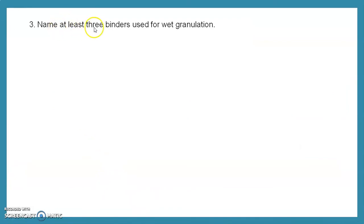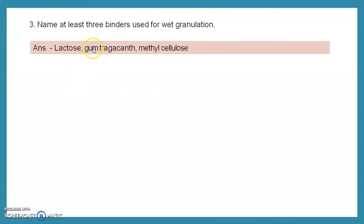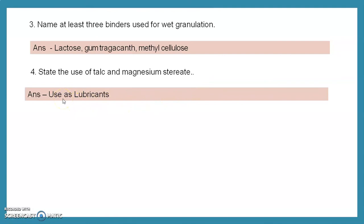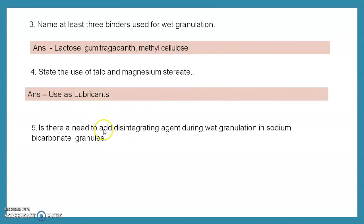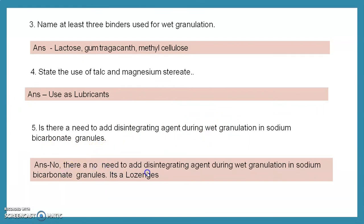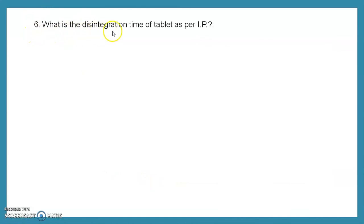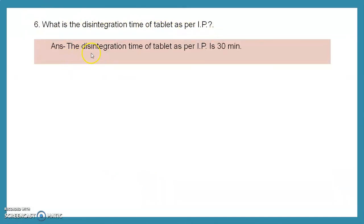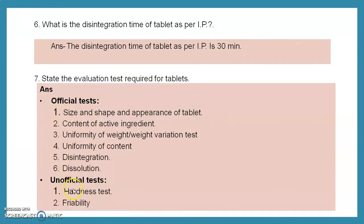Question 3: name at least three binders used for wet granulation. Answer: lactose, gum tragacanth, and methyl cellulose. Question 4: state the use of talc and magnesium stearate. Answer: talc and magnesium stearate are used as lubricants in tablet manufacturing. Question 5: is there a need to add a disintegrating agent during wet granulation in sodium bicarbonate granules? Answer: No, there is no need to add a disintegrating agent because it is a lozenge.